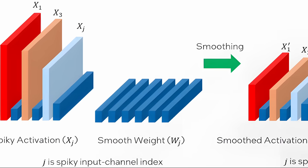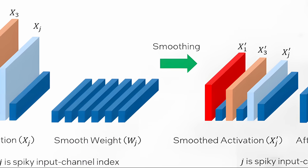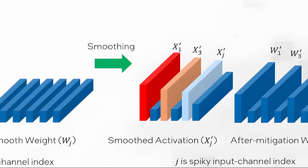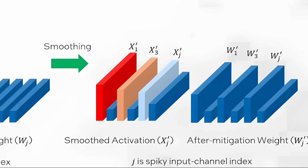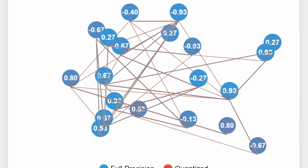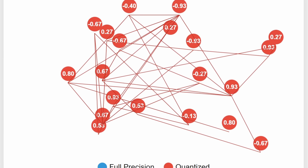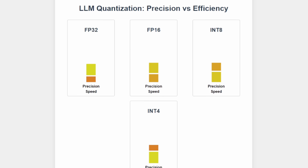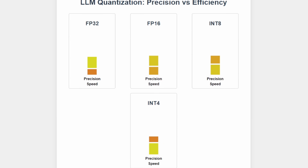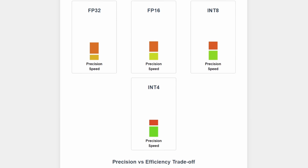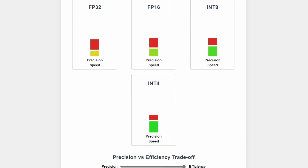Before we dive into the specifics, let's take a moment to understand the different quantization methods. Quantization is the process of reducing the precision of the numbers used in the model, which can significantly lower the memory requirements and computational load. There are several levels of quantization, including FP32, FP16, INT8, and INT4, each offering a different balance between precision and efficiency.